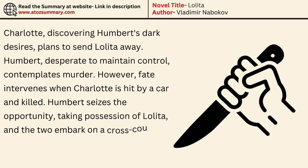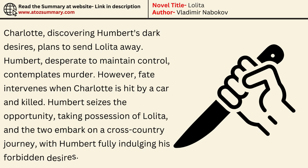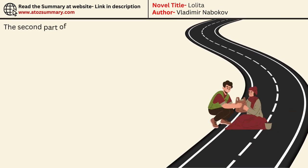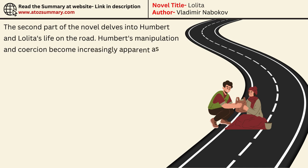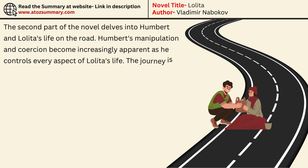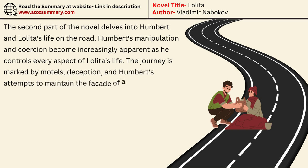Fate intervenes when Charlotte is hit by a car and killed. Humbert seizes the opportunity, taking possession of Lolita, and the two embark on a cross-country journey, with Humbert fully indulging his forbidden desires. The second part of the novel delves into Humbert and Lolita's life on the road, with Humbert's manipulation and coercion becoming increasingly apparent as he controls every aspect of Lolita's life.